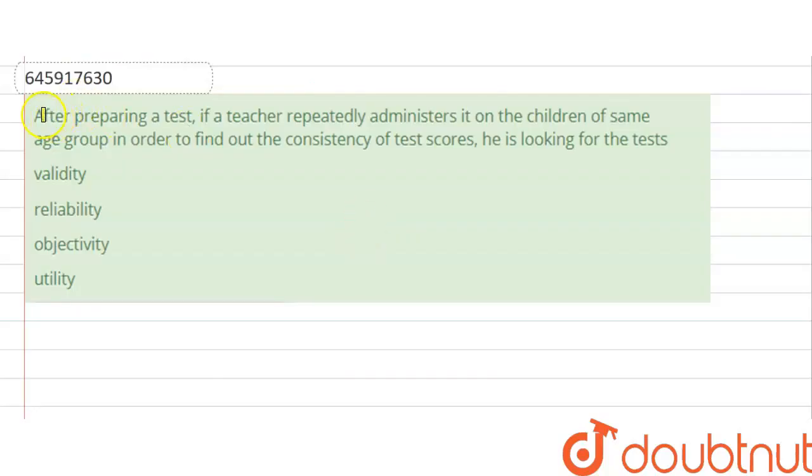Hello everyone, the question here is that after preparing a test, if a teacher repeatedly administers it on the children of same age group in order to find out the consistency of the test score, he is looking for the test what?